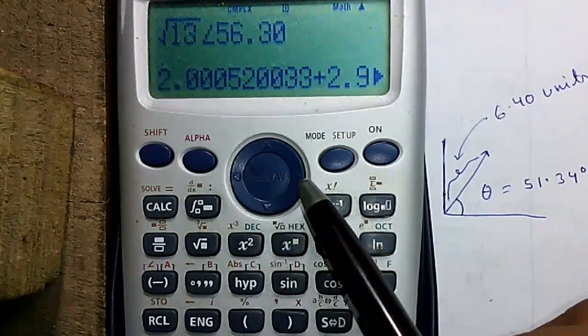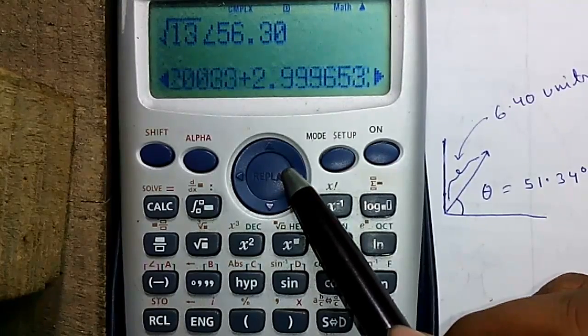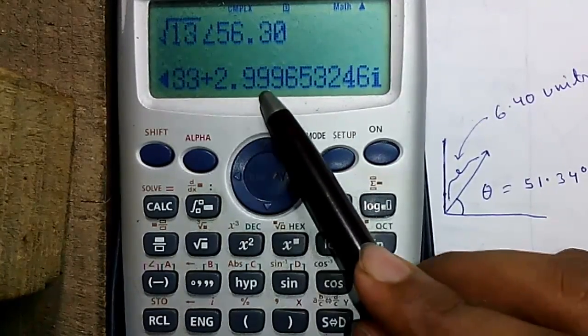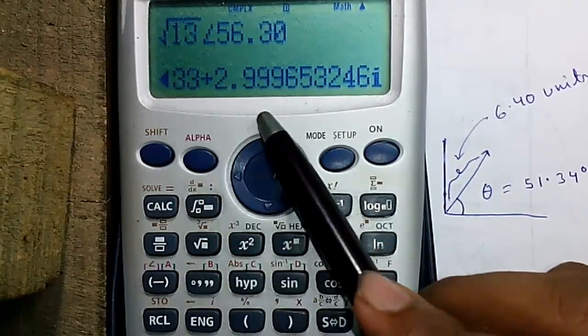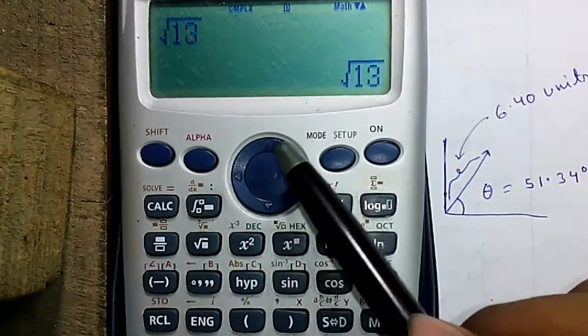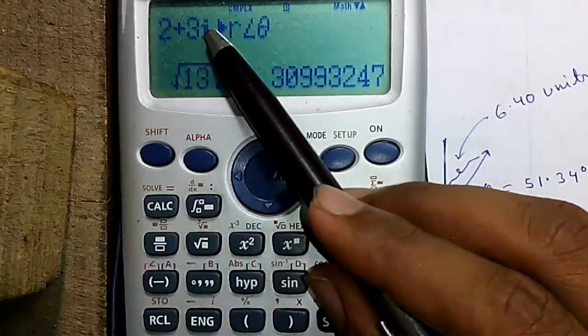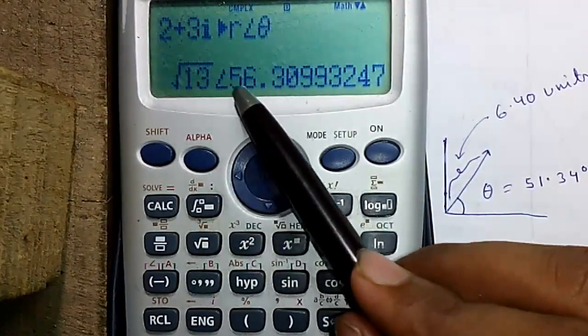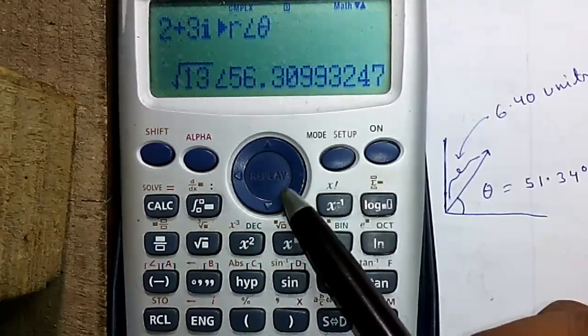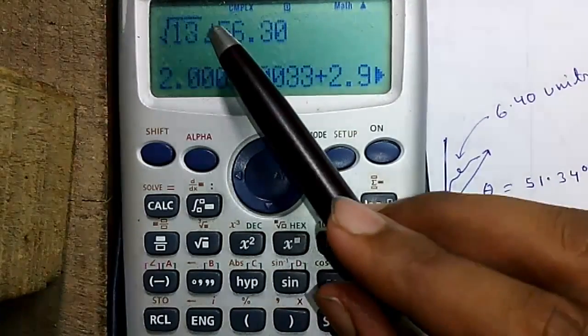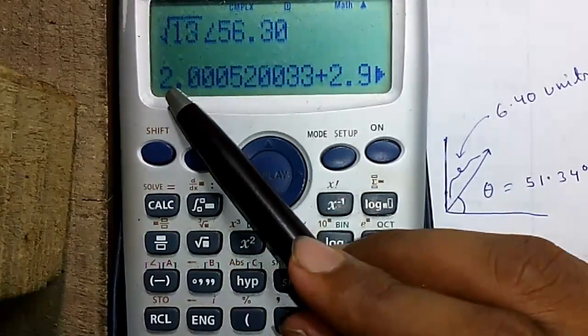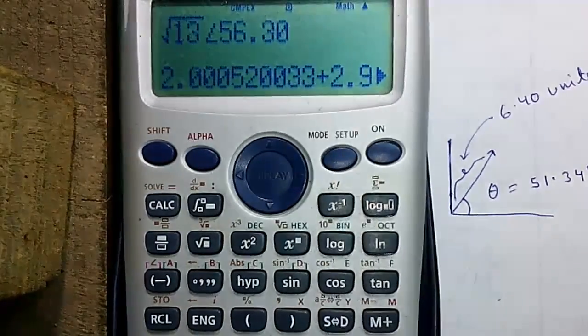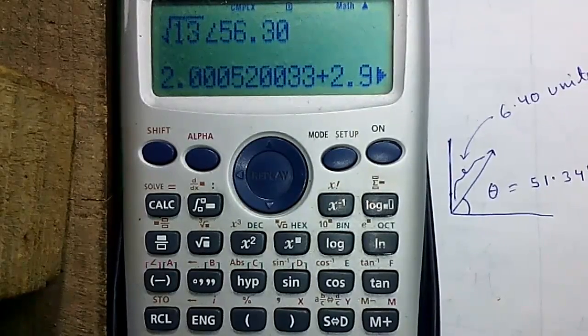And press equals. That equals 2 plus 2.259i, or in round figure we can say 2+3i. Previously we converted from 2+3i to polar format. We got √13 and angle 56.30. And when we convert it from √13 and angle 56.30, we got the same value, that is 2+3i. That is the meaning.